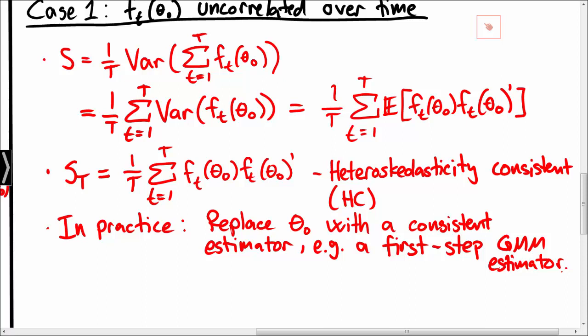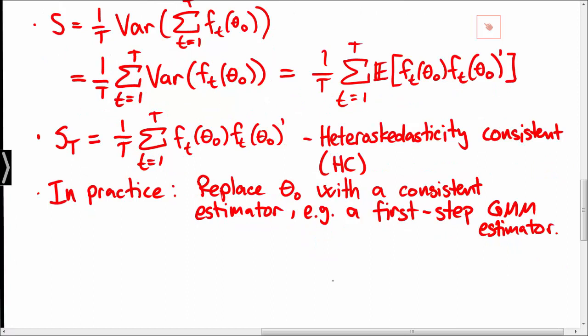Here the first GMM estimator refers to the case where we may have selected some arbitrary weight matrix Wt, such as the identity matrix. Recall that given identification and the law of large numbers, the GMM estimator based on this arbitrary weight matrix should be consistent. It is not efficient but it is consistent, and we can use it to obtain an estimator for St.